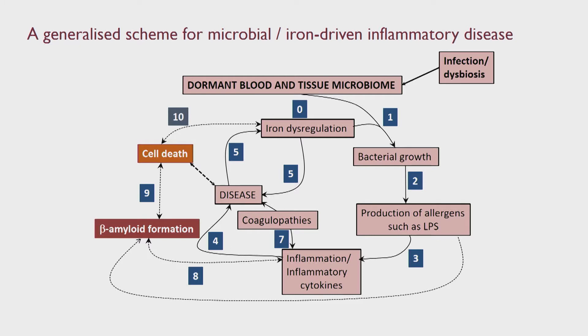What we more recently found is that they also have some dramatic effects on the clotting of human blood. And these coagulopathies so-called are actually a major part of these chronic inflammatory diseases, which lead to the formation of something called amyloid, and that itself is toxic and leads to cell death. These are the kinds of manifestations of these chronic inflammatory diseases — whichever place they're in, different disease, different microbes, different places, but the basic story is the same.